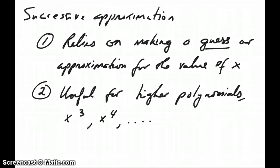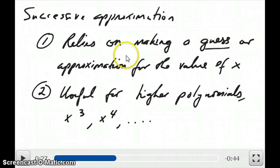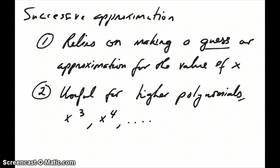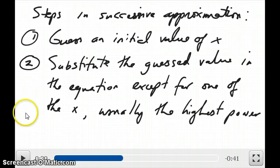Now the second method is called successive approximation. Successive approximation is really a method that relies on making a guess or an approximation for the value of x. And this is really useful for higher polynomials because for quadratic, you can always use the quadratic equation. These are the steps in successive approximation. First you start by guessing what an initial value of x might be. You might start with x equals zero, for example, you make a small x assumption or whatever,